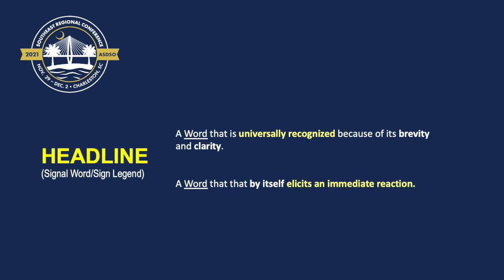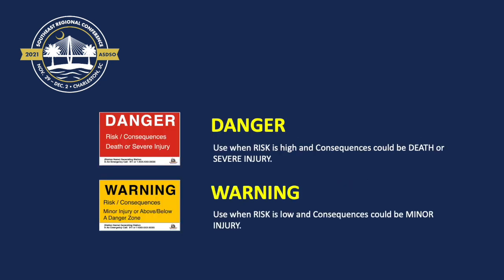Your headline — also referred to as a signal word or sign legend — is a single word. It is universally recognized because of its brevity and clarity, and it elicits an immediate reaction by itself. We're going to use a danger sign when the risk is high — when there's a high probability of death or severe injury, we use a red sign with white lettering. When the risk is low — a possible minor injury that's not life-threatening — we use a warning sign: yellow with black lettering. Typically, warning signs are going to be above or below a danger zone.